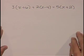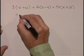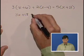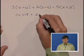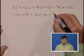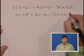So we are going to solve this on the next page. 3x plus 18 when we distribute the parenthesis plus 2x minus 8 when we distribute the parenthesis is equal to 5x plus 10 when we distribute the parenthesis.